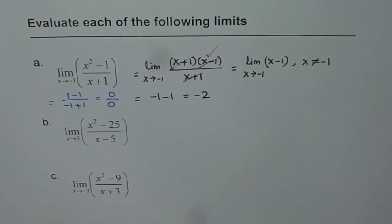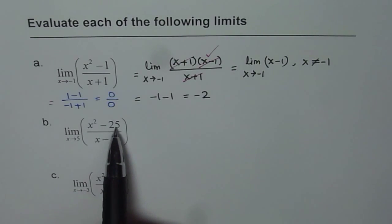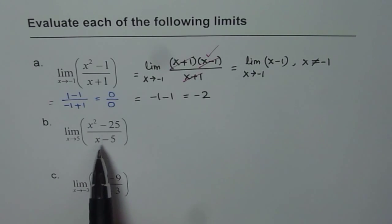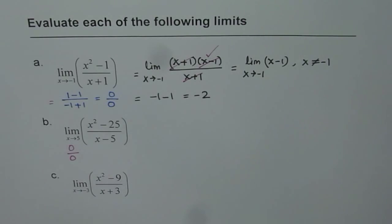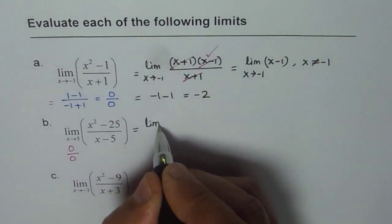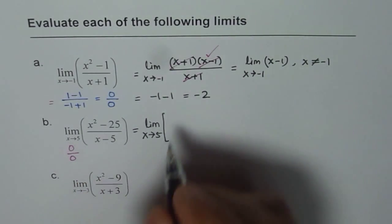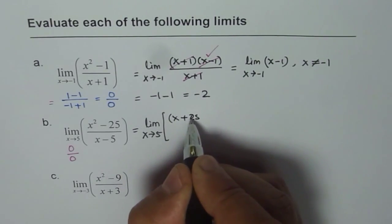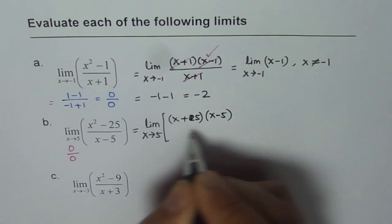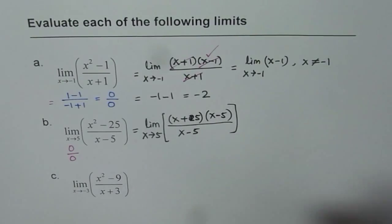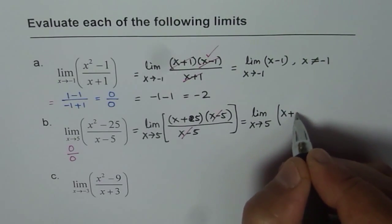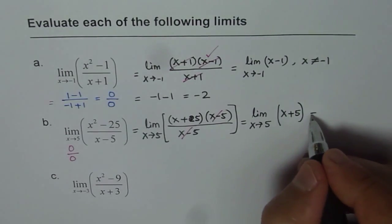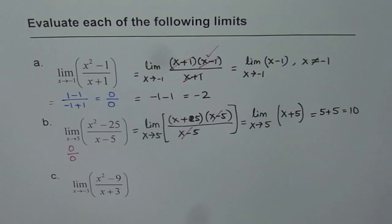You can follow the same strategy for the second example. If I substitute 5, I get 5 squared minus 25. 5 squared is 25, so 25 minus 25 is 0 and 5 minus 5 is also 0 — this is the 0 over 0 form. So we factor the numerator: x squared minus 25 equals x plus 5 times x minus 5, divided by x minus 5. The common factor x minus 5 cancels, leaving the limit as x approaches 5 of x plus 5. Substituting 5 gives 5 plus 5, which is 10.